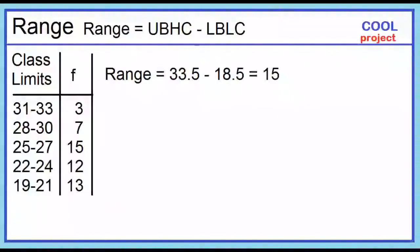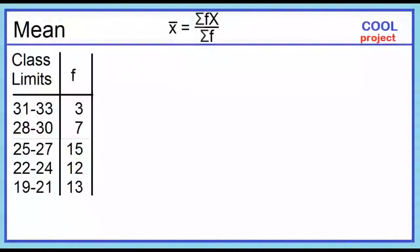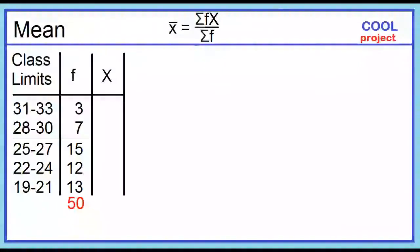How to find the mean? The mean is equal to the sum of the product of the frequency and the class mark, divided by the total frequency. The total frequency is 50, since 3 plus 7 plus 15 plus 12 plus 13 equals 50. Let's add a column for the class mark. The class mark or midpoint is the sum of the lower limit and the upper limit divided by 2.